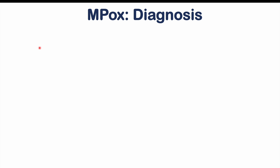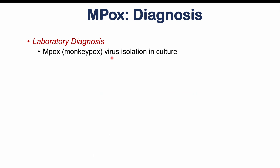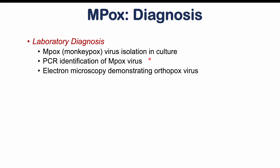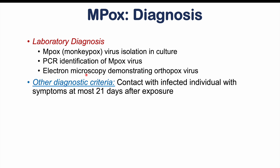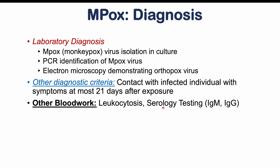Diagnosis of M-pox is via laboratory methods: culture isolation of the virus, PCR identification, or electron microscopy demonstrating an orthopoxvirus. Clinical diagnosis can also be made if a patient has had contact with a known infected individual and develops symptoms within 21 days of exposure. Additional blood work may show leukocytosis — a high white blood cell count — and serology testing can detect antibodies against the M-pox virus.